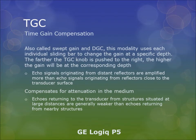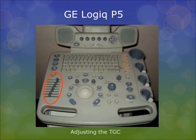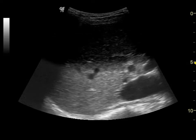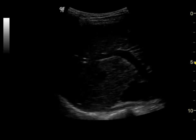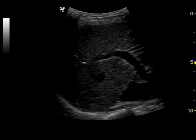Time Gain Compensation, also called Swept Gain or DGC, uses each individual sliding bar to change the gain at a specific depth. The farther the TGC knob is pushed to the right, the higher the gain will be at the corresponding depth. Echo signals originating from distant reflectors are amplified more than those from reflectors close to the transducer surface. TGC compensates for attenuation in the medium, as echoes from distant structures are generally weaker than echoes from nearby structures. As each TGC bar is moved to the left, gain at a single depth decreases; as each bar is slid to the right, gain increases at that depth.